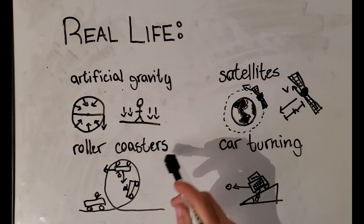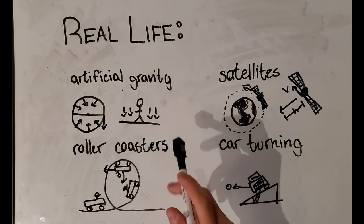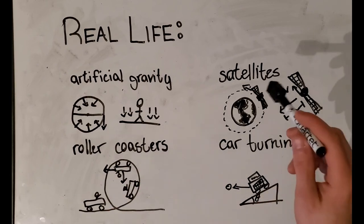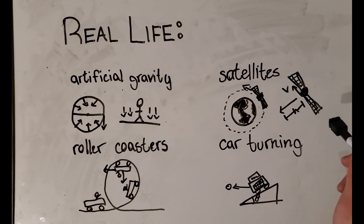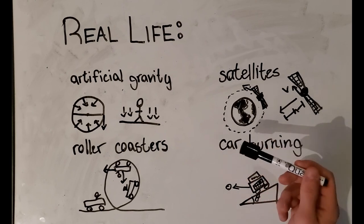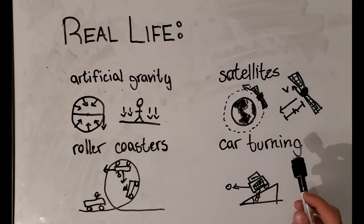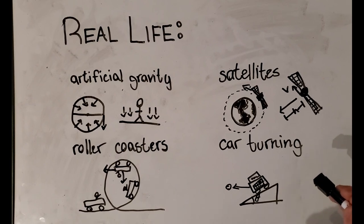Another example would be roller coasters. When you're at the top of the roller coaster, the reason you don't fall out and splat on the ground is because the velocity is so fast. Another example would be satellites. If you want them to orbit at a certain height above Earth, they have to go at a certain speed so that they don't get sucked down due to its gravitational pull. And the final example would be the banked curve questions that we did, where if your car is turning at a certain angle and speed, it won't slip or fall off.